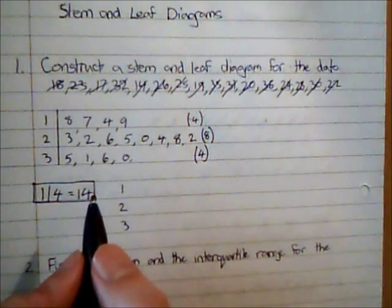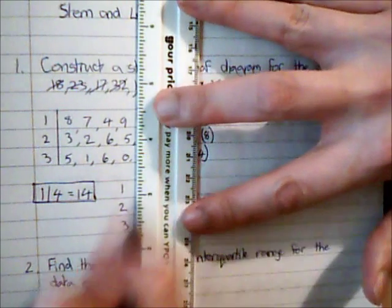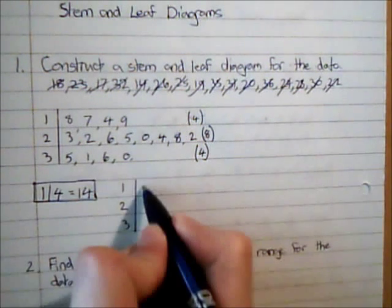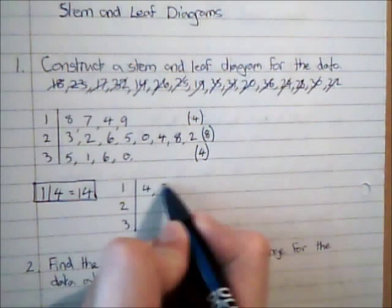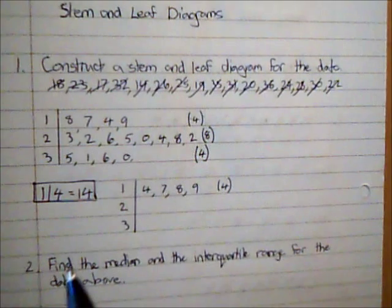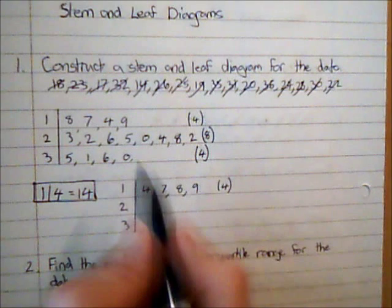So I'm going to use my same stems here. But I'm going to rewrite eight, seven, four, nine in the correct order. So four, seven, eight, nine.